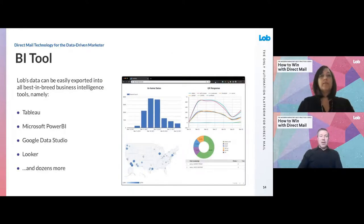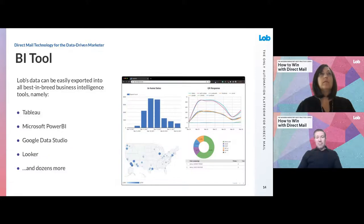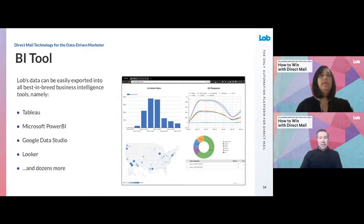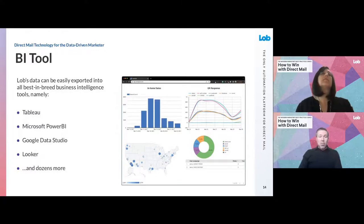The last thing I wanted to touch on is how do we roll all of this up into a more informed analysis. There are a number of BI tools out there — I created this one in maybe a half hour using some Google web analytics data and some of Lob's mail data. What I'm doing is taking data from all of these disparate sources and rolling it up into a tool like Tableau, Power BI, or Looker. When you can marry the distribution of in-home dates with the incremental lift you saw in web traffic in the corresponding days or weeks after the bulk of that distribution landed in market, it really does help paint a more holistic picture of the success of your campaign.